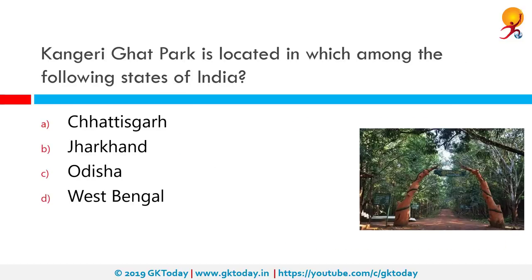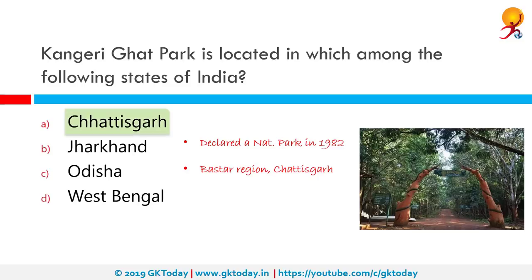Kanger Ghati Park is located in which state of India? Kanger Ghati National Park was declared a national park in 1982 by the Government of India. The Kanger Valley National Park near Jagdalpur in the Bastar region of Chhattisgarh is one of the densest national parks. The correct answer is Chhattisgarh. It is well known for its biodiversity, landscape, waterfalls, subterranean geomorphological limestone caves, and is home for the Bastar Hill Myna, the state bird of Chhattisgarh.